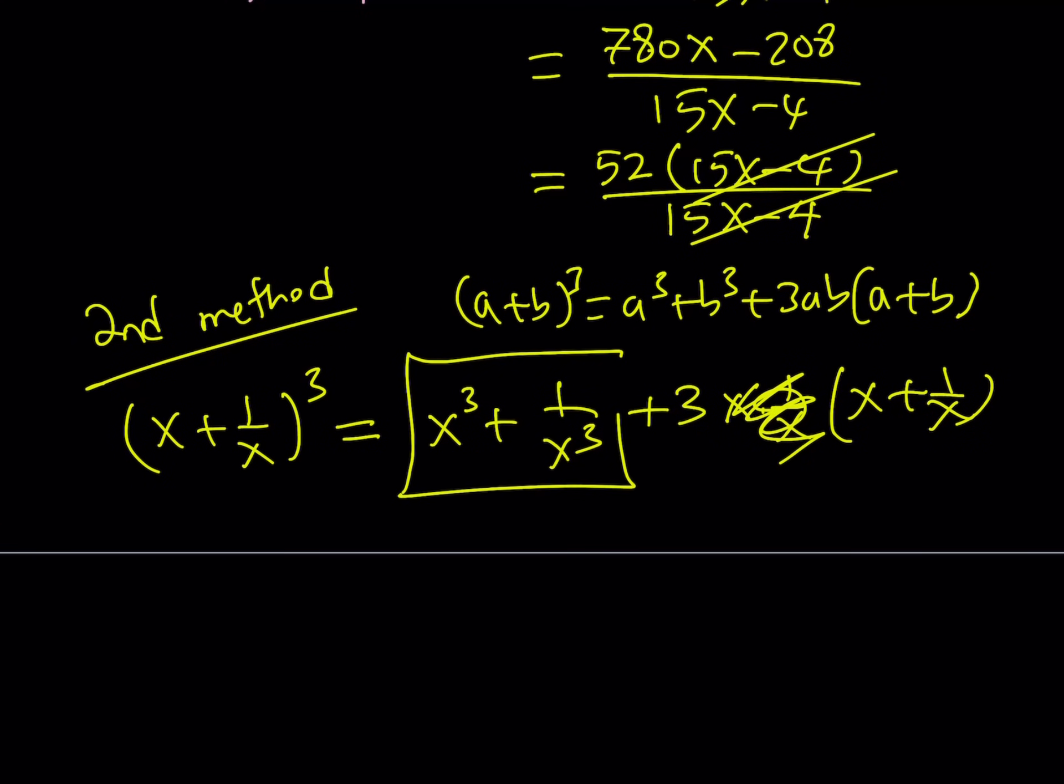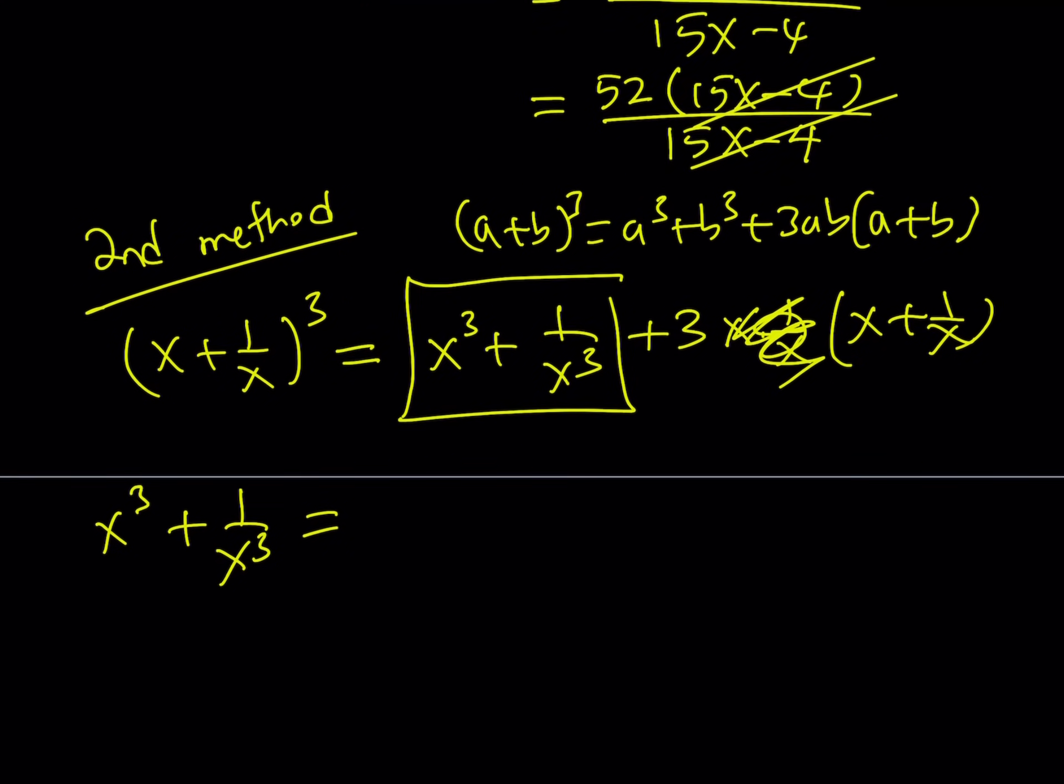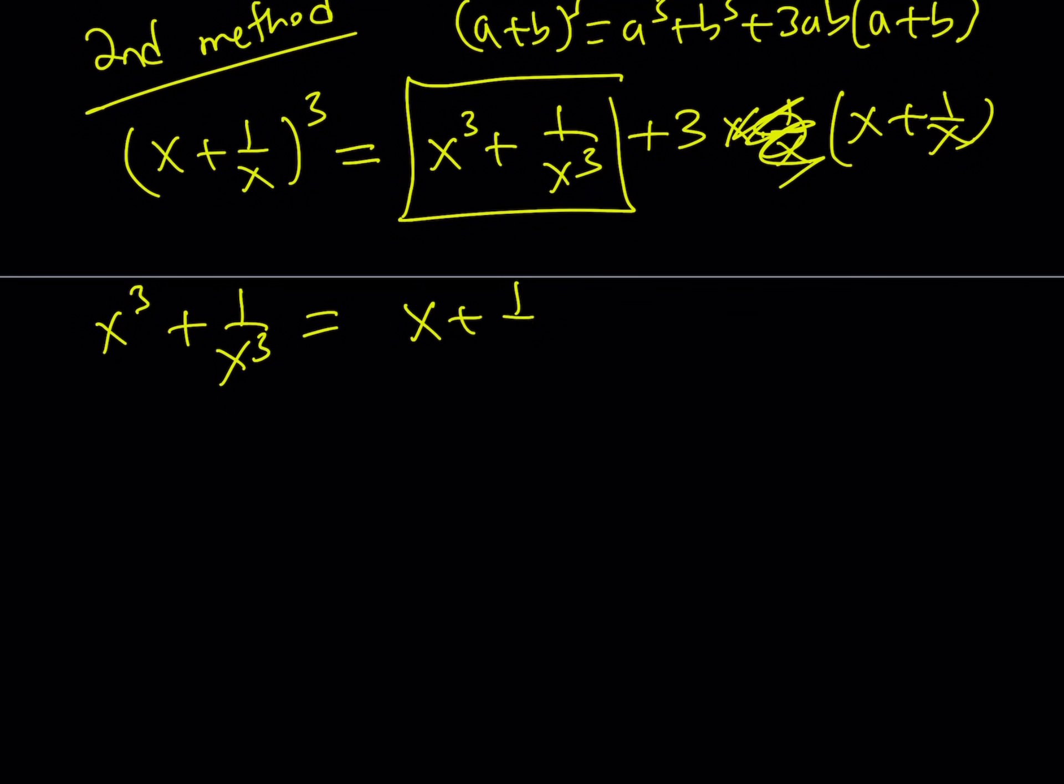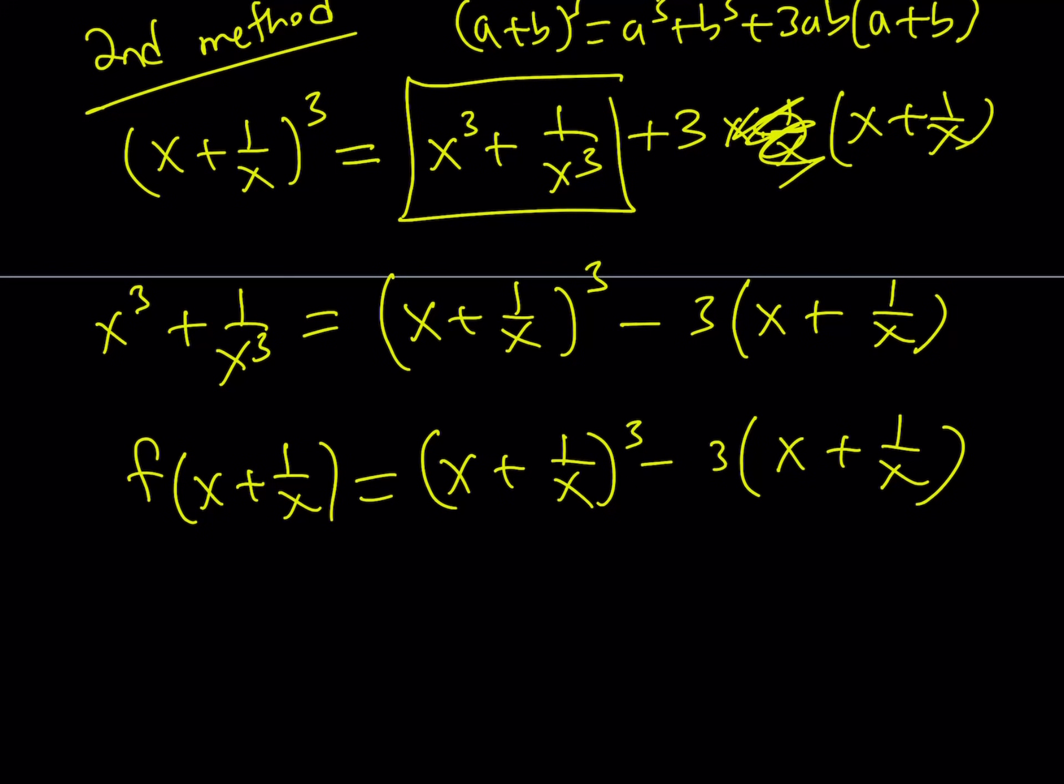And from here, my goal is to isolate x cubed plus 1 over x cubed. I can basically write it as the quantity x plus 1 over x cubed minus 3 times x plus 1 over x. Now you've got to remember that this expression on the left-hand side is equal to f of x plus 1 over x. So I kind of get this equation from here, which is really, really cool. And now I'm trying to evaluate f of 4, right?